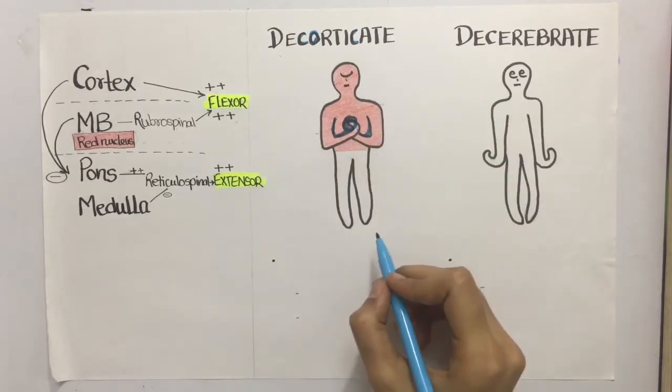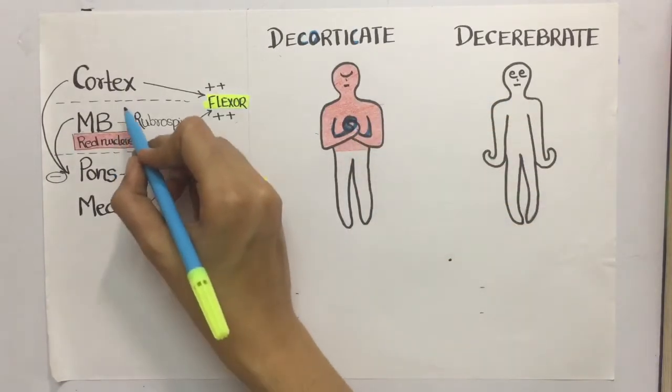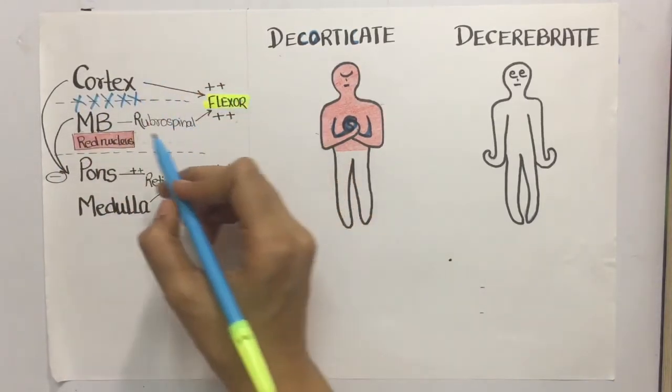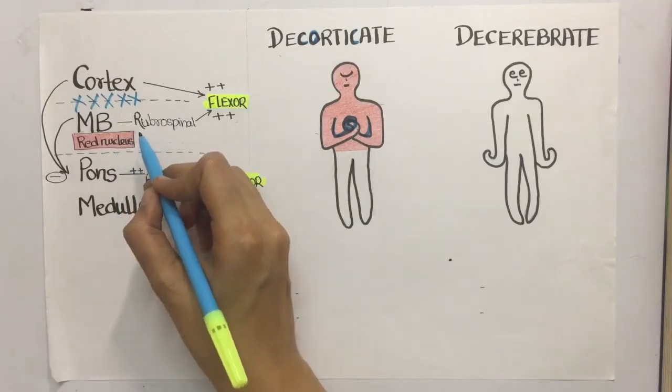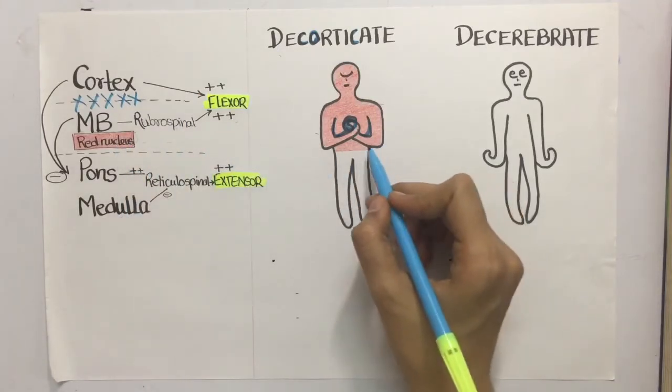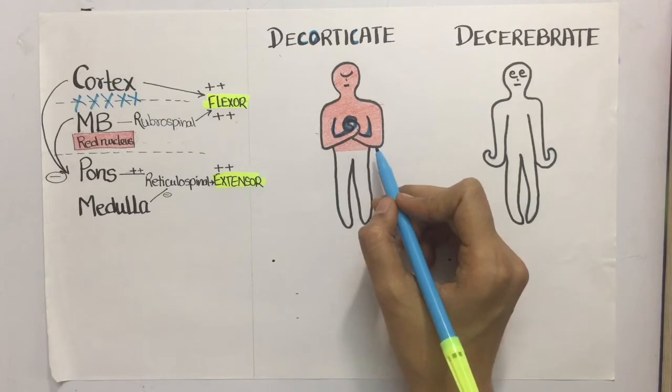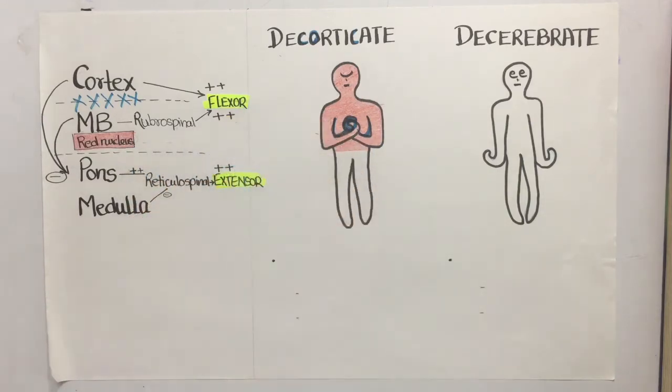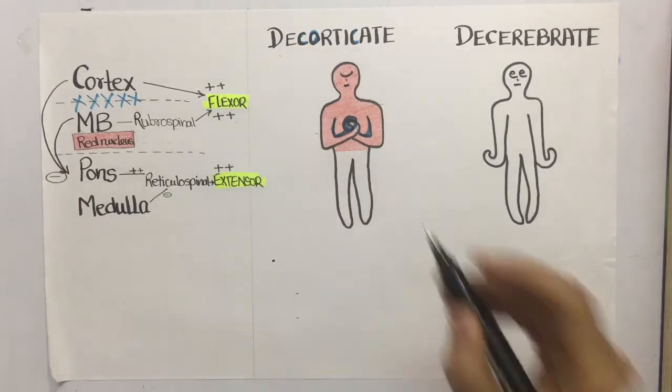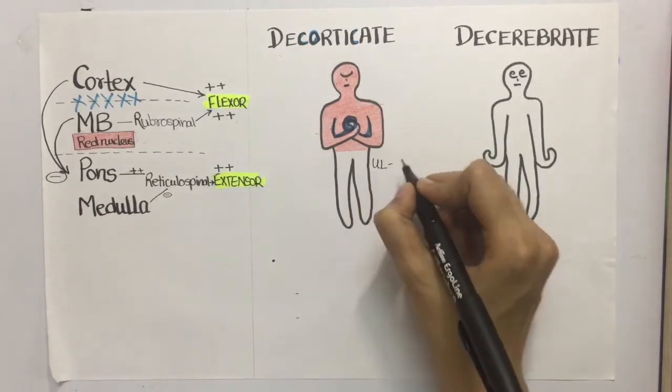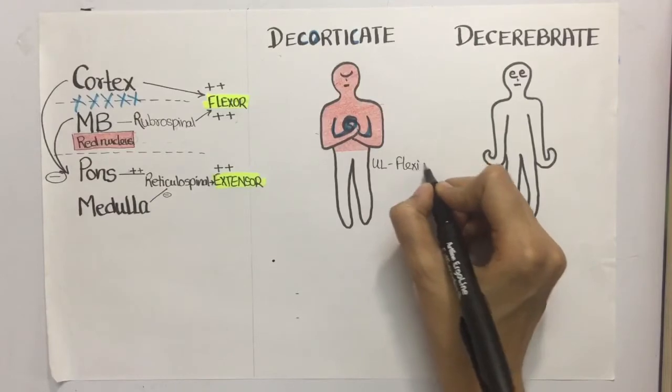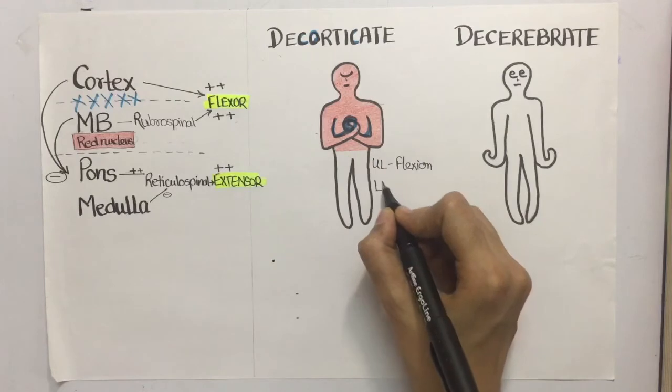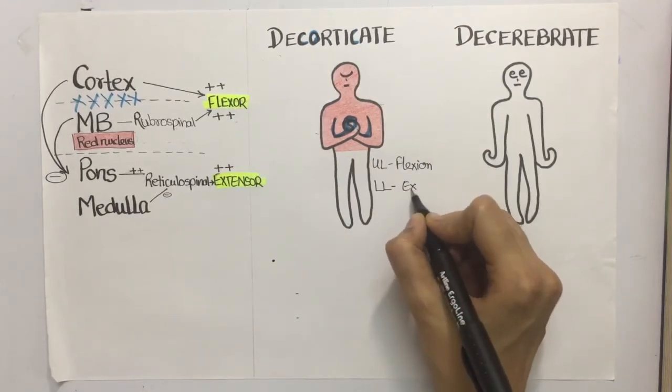The lesion in decorticate rigidity is above the red nucleus, that is at this level in the cerebral cortex, so the red nucleus is overactive. That is why I have colored this man red in color because the red nucleus is overactive. The rubrospinal tract stimulates the flexors and the upper limb is in flexion because these fibers end at the thoracic level and the lower limb is in extension.